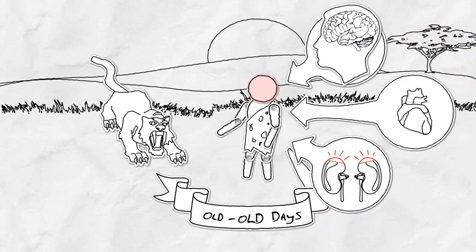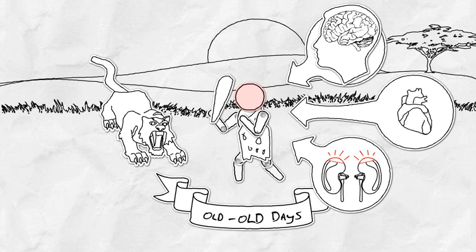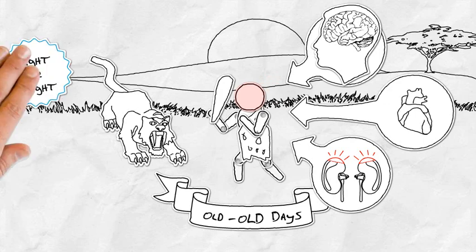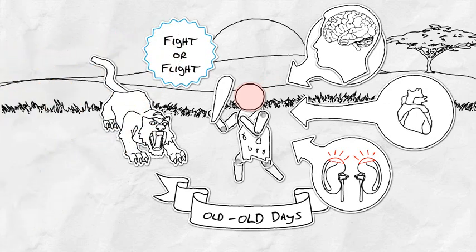Your body jolts you into action with stress hormones. Suddenly, because of them, you're alert, fast, and strong, and able to either fight or run. By the way, that's called the fight-or-flight response. Either way, the stress was good.